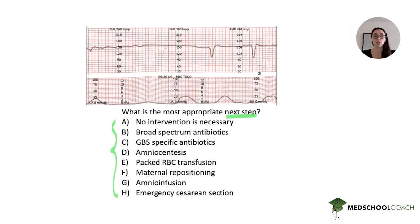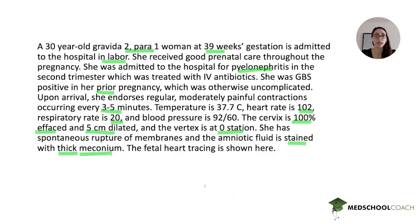Before interpreting the fetal heart tracing, let's eliminate clearly wrong answers. 'No intervention is necessary' — we leave that for now. 'Broad-spectrum antibiotics' — she's afebrile with no uterine tenderness suggesting chorioamnionitis, no foul-smelling amniotic fluid, no vaginal discharge, no costovertebral angle tenderness. The absence of fever and only borderline elevated heart rate means we can cross off broad-spectrum antibiotics.